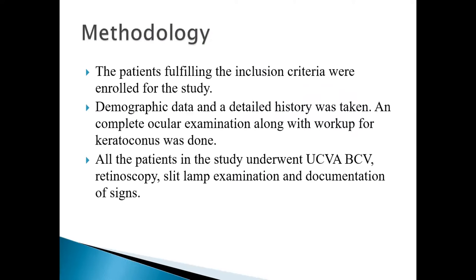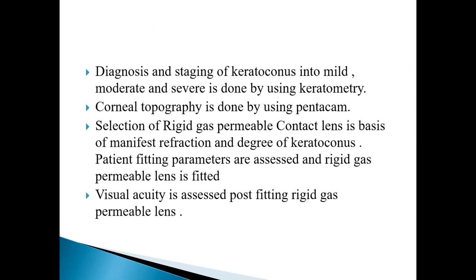Coming to methodology, patients fulfilling inclusion criteria are enrolled for the study. Demographic data and detailed history was taken and complete ocular examination along with workup for keratoconus was done. All patients in the study underwent uncorrected visual acuity, best corrected visual acuity, retinoscopy, slit lamp examination and documentation. Diagnosis and staging of keratoconus into mild, moderate, and severe categories was done using keratoconus metric. Topography was done using Oculus Keratograph. Collection of rigid gas permeable contact lenses was done on basis of keratometry, refraction and trial performance. Patient fitting parameters were assessed and RGP lenses were prescribed.